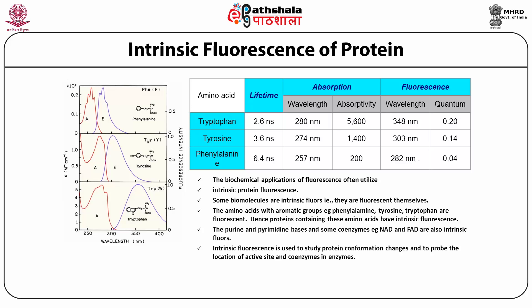The biochemical application of fluorescence often utilizes the intrinsic fluorescence of the protein. Some biomolecules have intrinsic fluorescence — that is, they are fluorescent themselves. The amino acids with aromatic groups such as phenylalanine, tyrosine, and tryptophan are fluorescent; hence molecules containing these amino acids have intrinsic fluorescence. The purine and pyrimidine bases and some coenzymes such as NAD and FAD are also intrinsically fluorescent. Intrinsic fluorescence is used to study protein conformational changes and to probe the location of active sites.